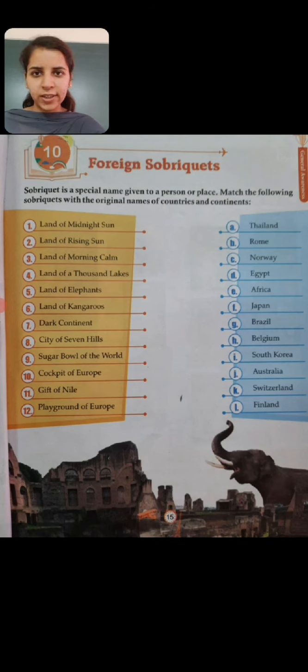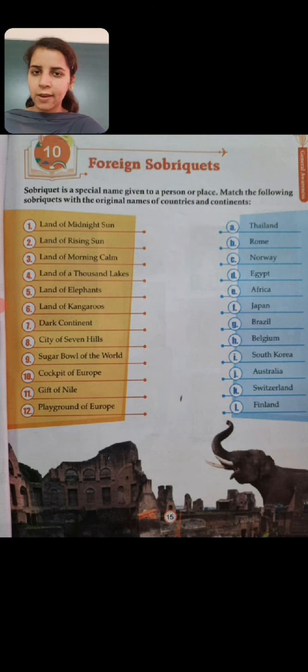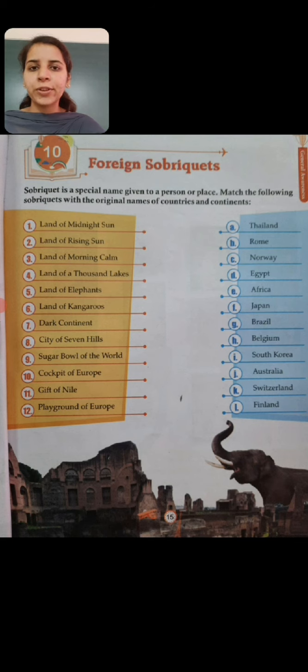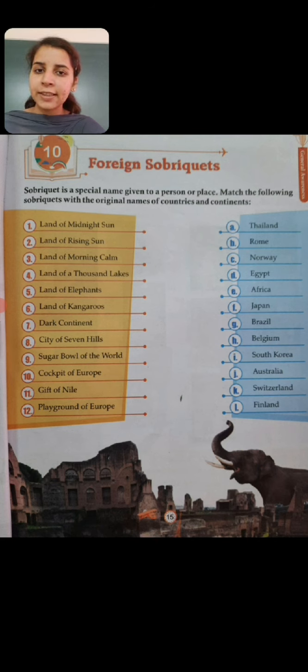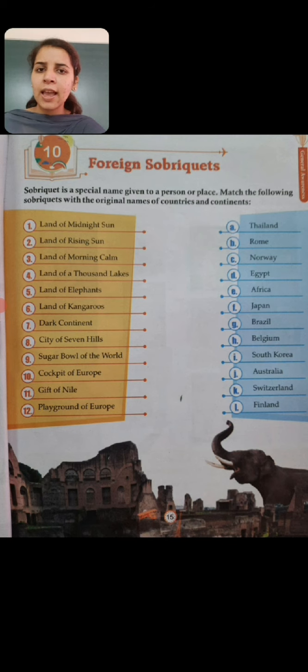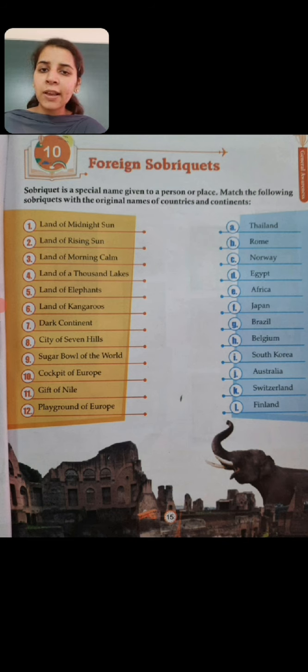Good morning dear students. Today we will start with a new chapter of GK which is foreign sobriquets. So students, what do you mean by sobriquet? It is a special name given to any person or place, and you may apply this as a nickname for a specific person or a place. It is used in place of the real name. In this chapter we have given some foreign sobriquets and we have to match them with the original names of countries and continents.